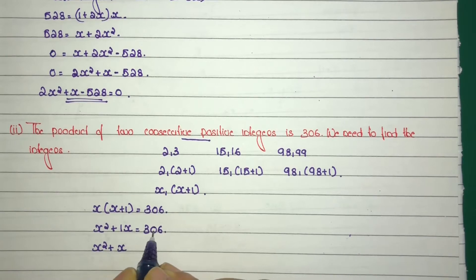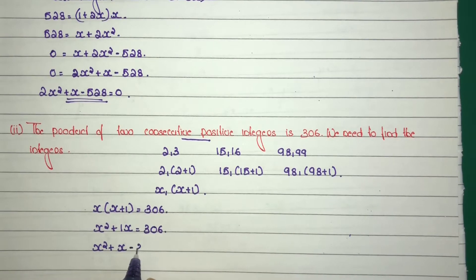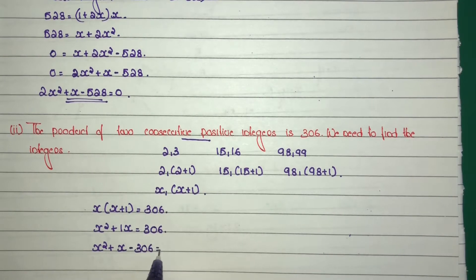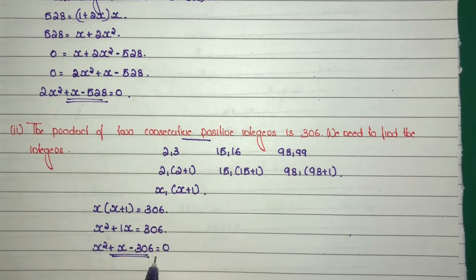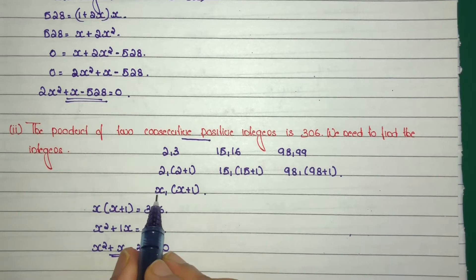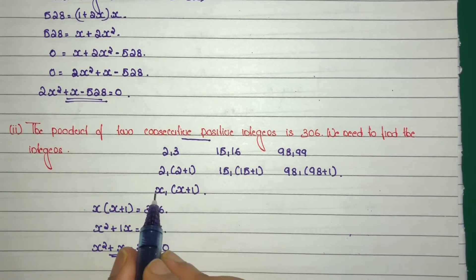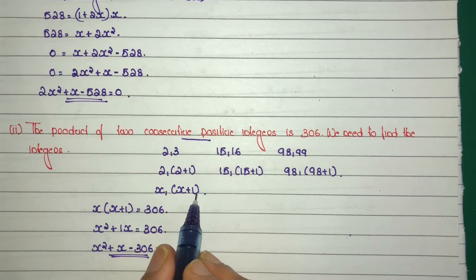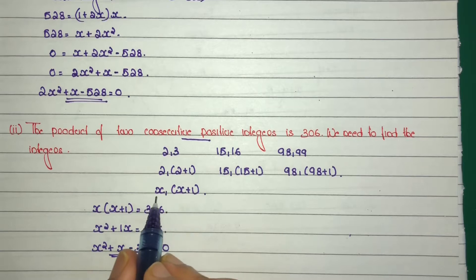Rearranging: x squared plus x minus 306 equals 0, where x is the smallest integer of the two consecutive positive integers.